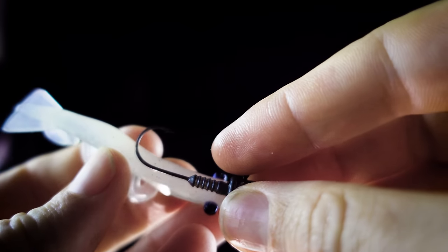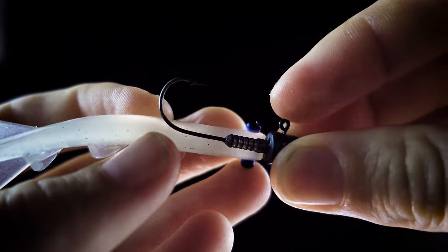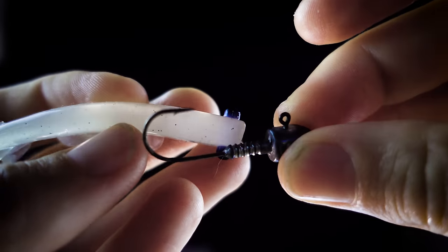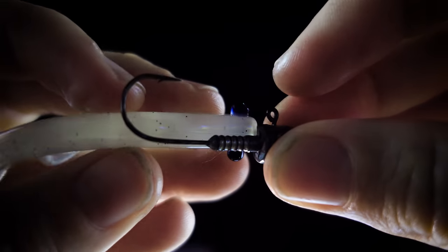I'm not much of a plastics fisherman, but this is seriously a helpful tip. Lay your hook 90 degrees on top of the soft plastic, making sure to push the plastic into the jig head so you get the right distance.